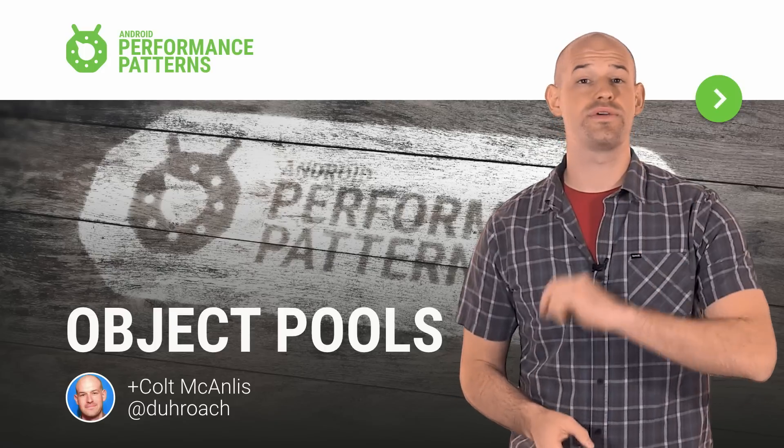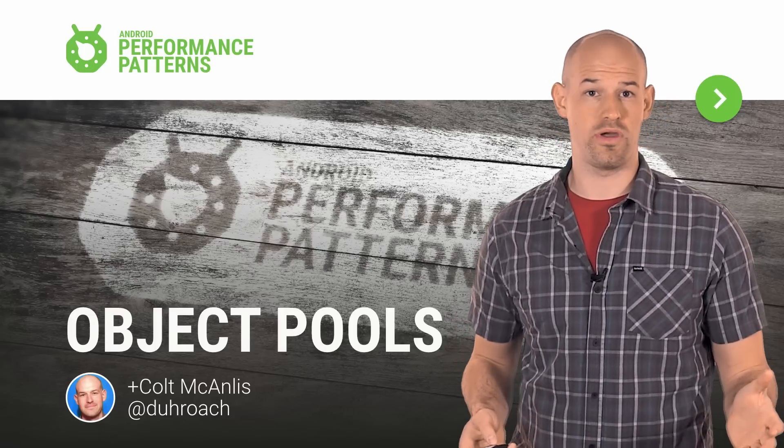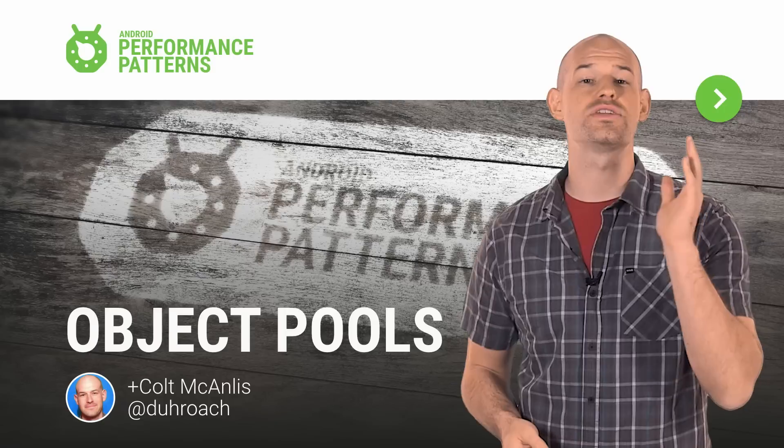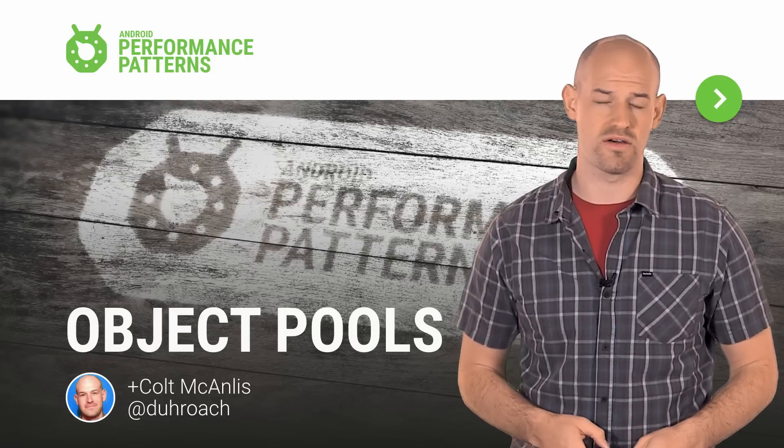Memory churn is a constant and serious problem for the performance of your applications. Allocating loads of temporary objects in a short period of time puts a ton of pressure on your memory heaps, resulting in more GC events being kicked off.